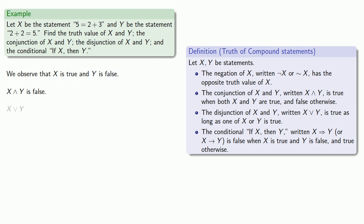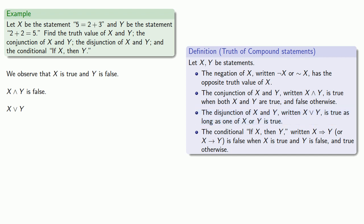The disjunction, x or y, is true as long as at least one of the statements is true. In this case, x is true, and that makes the disjunction true.